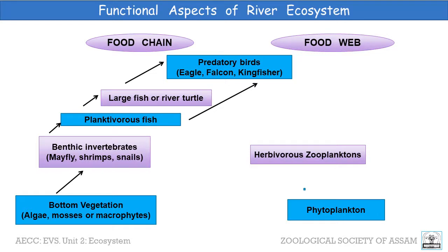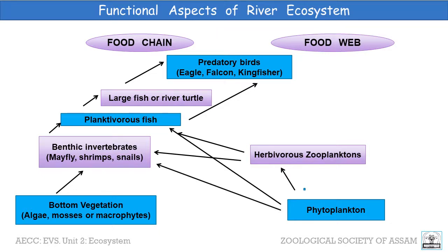Again, phytoplanktons are consumed by herbivorous geoplankton — that is primary consumers — which are in turn consumed by either planktivorous fish or benthic invertebrates. In this way, due to the feeding habits of the organisms in a river ecosystem, various food chains are interconnected to produce a network called a food web. Via the food chain and food web, the various levels of organisms — from producers and various levels of consumers — are interconnected to each other.